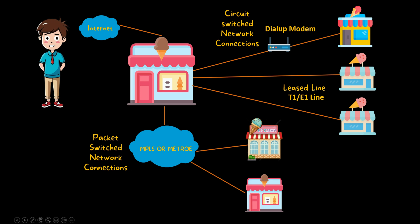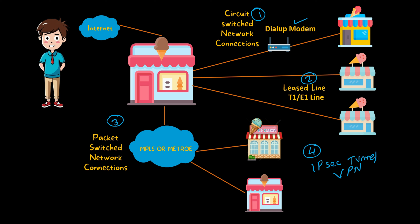To create a WAN connection between multiple locations, we have different options: circuit switched network connection using a dial-up modem; leased line also called T1 or E1 line, which is a dedicated link between two locations provided by the service provider; packet switched network connection also called MPLS or Metro Ethernet, working based on packet switching between multiple virtual circuits; and IPsec tunnel or VPN. These are the most common types of WAN connections used in industry.